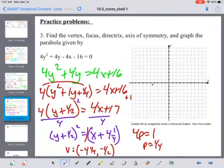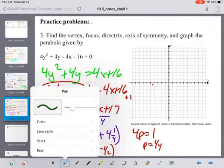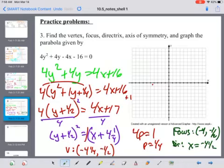I'm going to set 4p equal to the 1 out in front there of the x, which means my p is 1 fourth. My focus is going to be negative 4, negative a half. And my directrix is x equals negative 4 and a half.